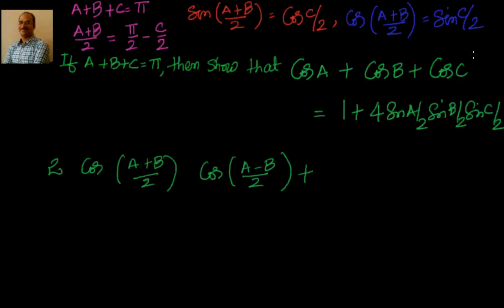Now let us see. What is cos((a+b)/2) and sin(c/2)? In the answer we also have sin(c/2). So I will write cos c as 1 minus 2 sin²(c/2), so that I can take sin(c/2) common.